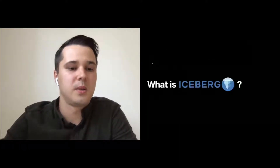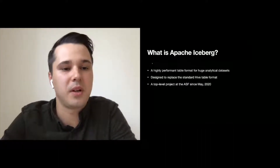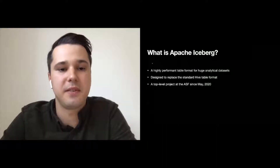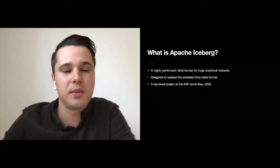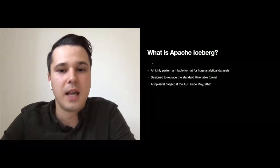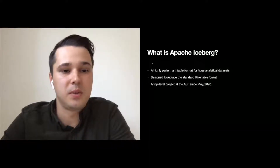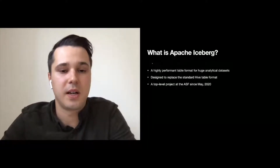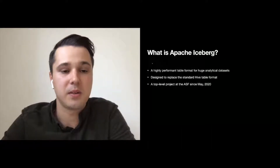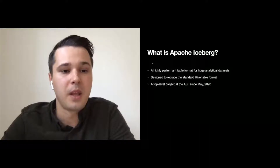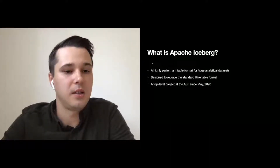Let's start with what Apache Iceberg is. As you've probably heard, Iceberg is a table format. The table format defines how one should lay out individual data files and bundle them up to have a concept of a table. The de facto standard table format built into query engines like Spark and Presto is the Hive table format. It usually means there is a central metastore that tracks a list of partitions, and whenever you need to find files within those partitions, you perform a list operation in underlying storage. This has a number of problems with respect to correctness and performance. Iceberg is designed to solve those problems and bring your data lakes to the next level. I'm also happy to announce that Iceberg is a top-level project at the Apache Software Foundation since May this year.